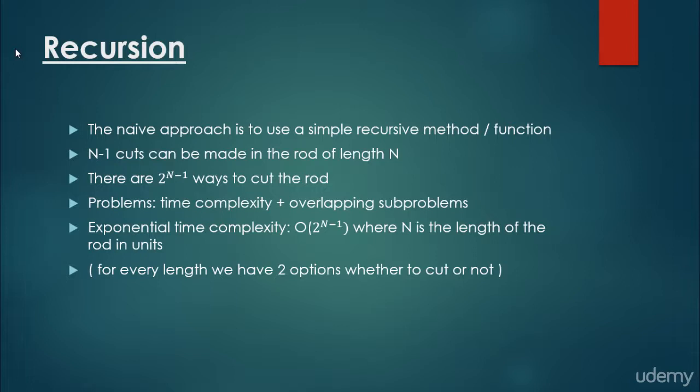It's important that these dynamic programming problems are usually integer problems, meaning we can only have integer values. For example, the rod length can be 1, 2, 3, 4, or 5 meters — as we'll also see with the knapsack problem. We cannot have values like 1.5 or 2.25.